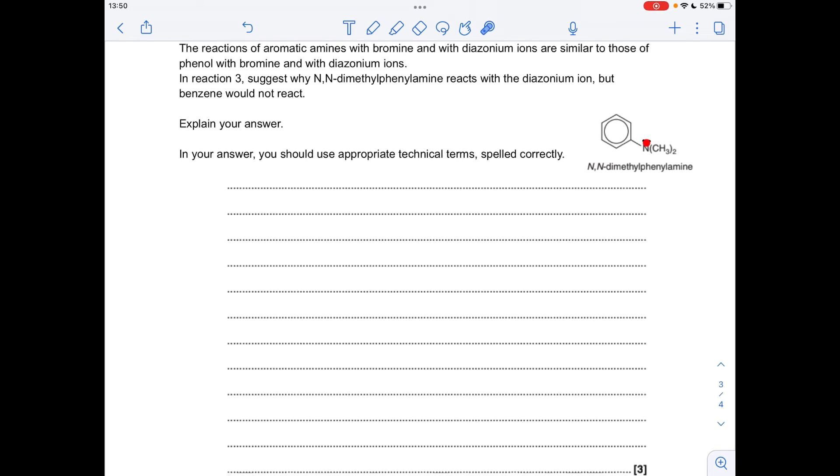So the lone pair on the nitrogen will become delocalised and become part of the pi electron cloud, and that raises the electron density of this pi system. And because of that, it's able to attract the diazonium ion, whereas in benzene you don't have anything like this - you've just got the ring. So the pi electrons are all delocalised, the electron density of the ring is low, and therefore it can't attract the diazonium ion.